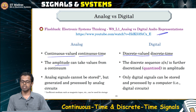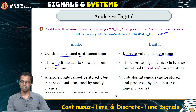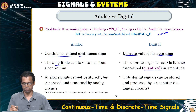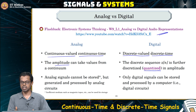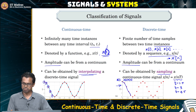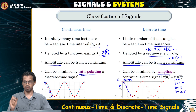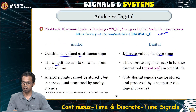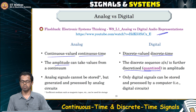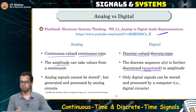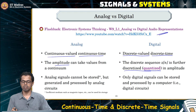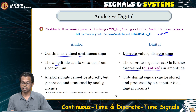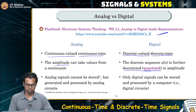A discrete time signal is not necessarily a digital signal. In order to get a digital signal from a discrete time signal, you have to quantize the amplitude — discretize it. Earlier, we said the amplitude can be from a continuum for a discrete time signal, but for a digital signal, the amplitude must be discretized. That is the main difference: all discrete time signals are not digital signals, but all digital signals are discrete time signals.